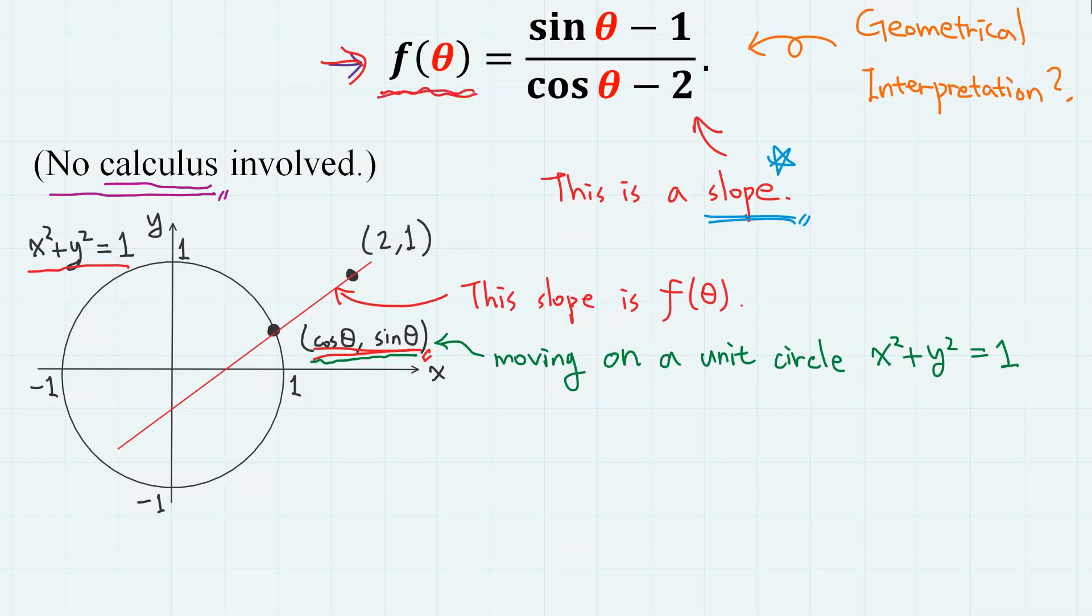Therefore, the meaning of this function f theta is the slope of the line connecting any points on the unit circle and point 2 comma 1. And we have to find the range of this slope.